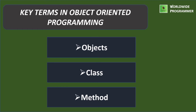Next key term is class. Objects contain data and code to manipulate the data. The entire set of data and code of an object can be made a user-defined data type with the help of a class. In fact, objects are variables of the type class. Once a class has been defined, we can create any number of objects belonging to that class. Thus a class is a collection of objects of similar type. For example, a mango, apple, and orange are members of the class fruit.